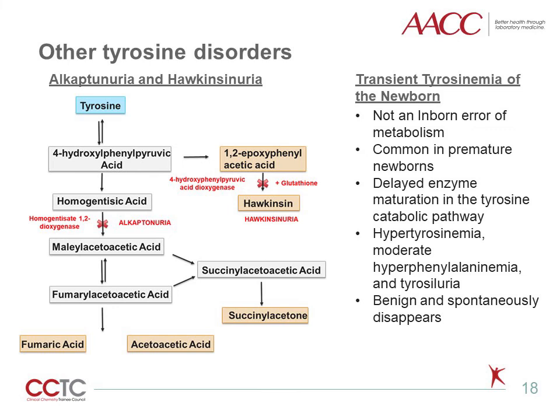Another tyrosine abnormality found in newborns is transient tyrosinemia. This is not an inborn error of metabolism, as it is not caused by a gene defect or mutation, but occurs as a result of delayed maturation of enzymes involved in the tyrosine catabolic pathway. This often occurs in premature infants with no clinical symptoms. Laboratory findings include hypertyrosinemia, moderate hyperphenylalaninemia, and tyrosinuria, and the condition often resolves spontaneously.